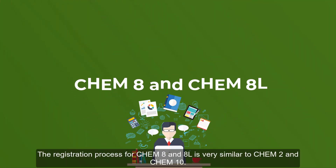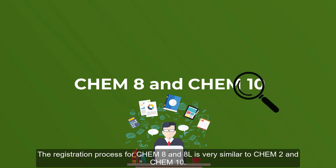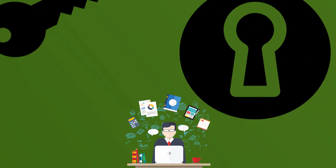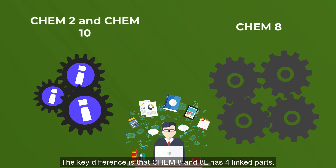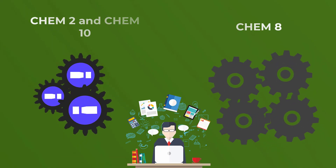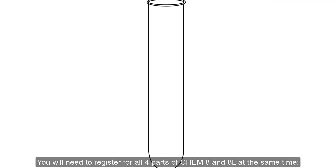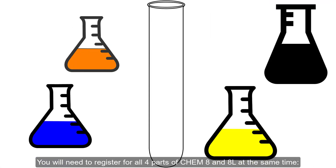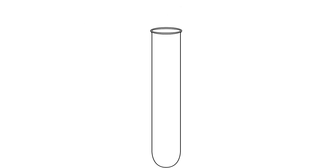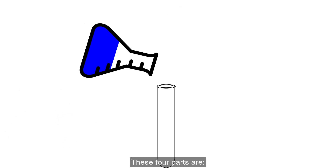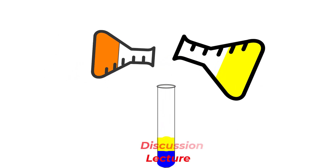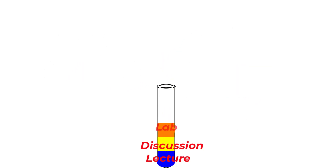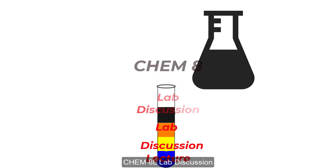The registration process for Chem 8 and 8 lab is very similar to Chem 2 and Chem 10. The key difference is that Chem 8 and 8 lab has four linked parts, and you will need to register for all parts at the same time. These four parts are Chem 8 lecture, Chem 8 discussion, Chem 8 lab, and Chem 8 lab discussion.